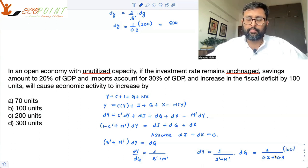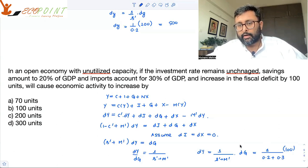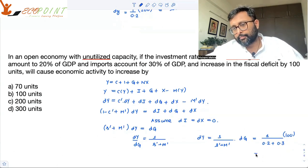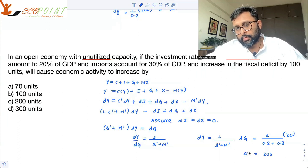That's more or less like increase in government expenditure. And once you solve this you will be getting dy as 1 upon 0.5 into 100, so that will come out to be 200. So output is going to increase by 200.